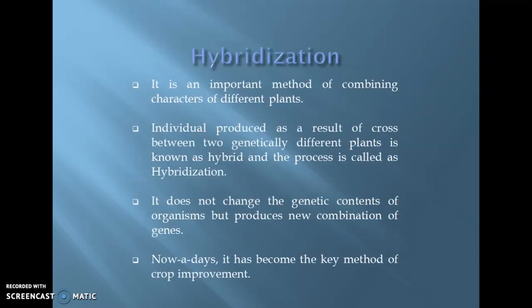This hybridization is considered as an important method of combining characters of two different plants. The production of a hybrid by crossing two individuals of unlike genetic constellation is known as hybridization. It does not change the genetic contents of the organisms but produces new combinations of genes. This hybridization process is more common in plants than animals.